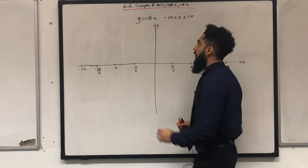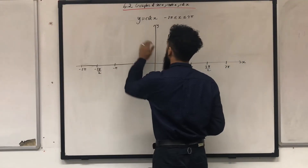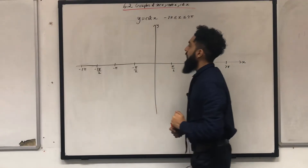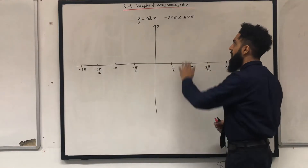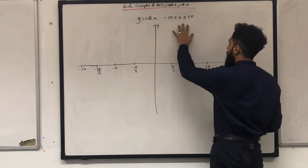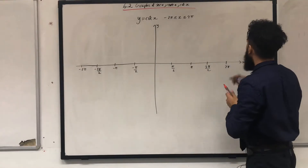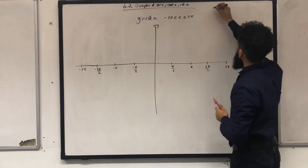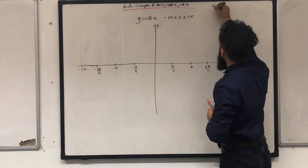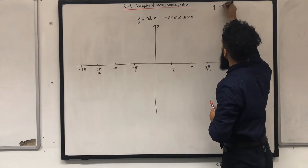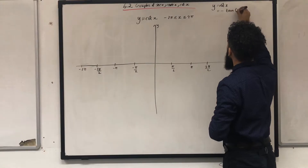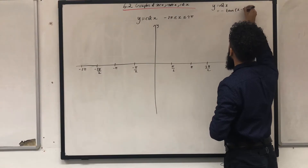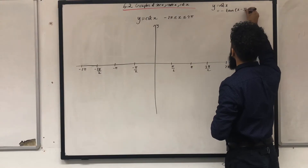Let's start off with the graph of y = cot x. The very first step is to notice that y = cot x is equal to minus tan(x minus π/2).